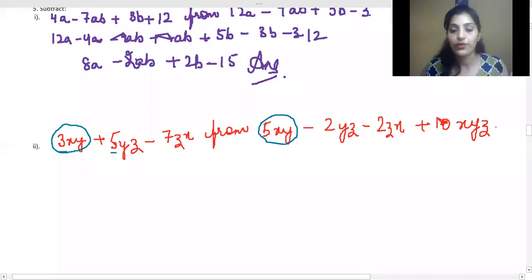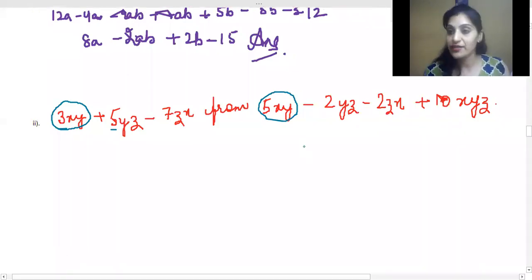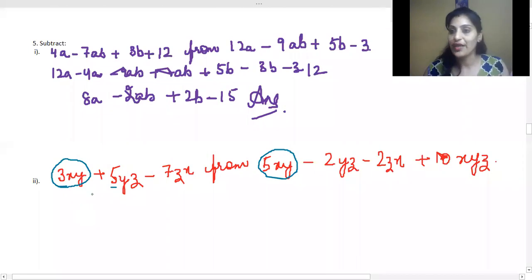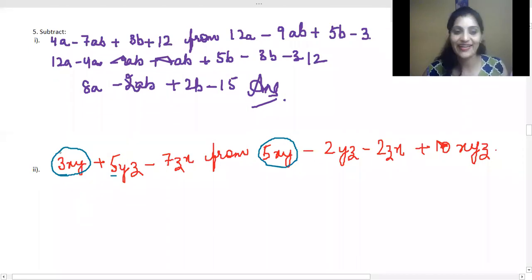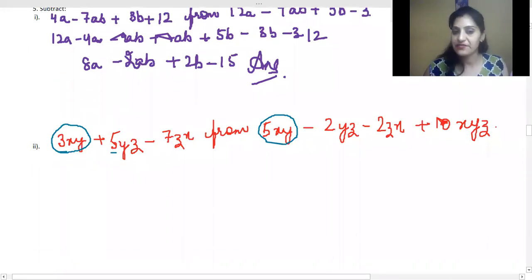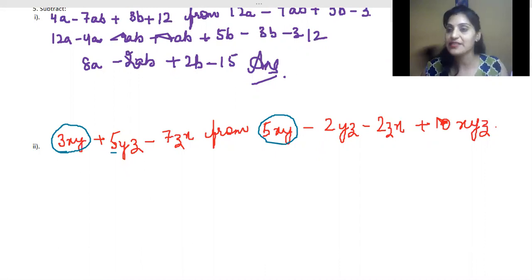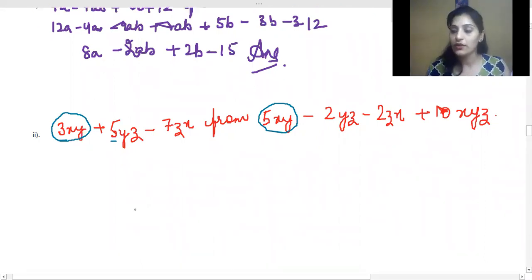Good evening, class. We are doing Exercise 9.1 from ML Aggarwal. We were at question number five, second part. We have to subtract 3xy plus 5yz minus 7zx from 5xy minus 2yz minus 2zx plus 10xyz.